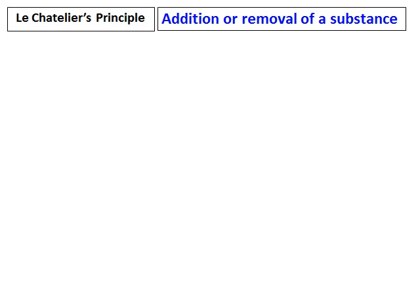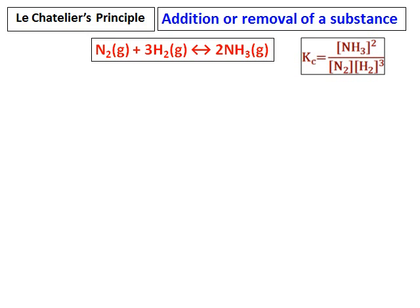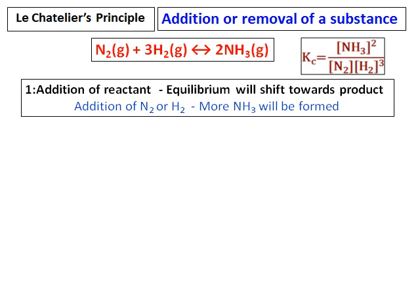Let's see how addition or removal of a substance affects an equilibrium. Consider the reaction: nitrogen plus hydrogen giving ammonia, with the equilibrium constant given. If I add a reactant — say, more nitrogen — the reaction has to proceed to decrease this increased nitrogen. The reaction will go towards the product, so the excess nitrogen reacts with hydrogen to give ammonia. Therefore, addition of a reactant will shift the equilibrium towards the product.